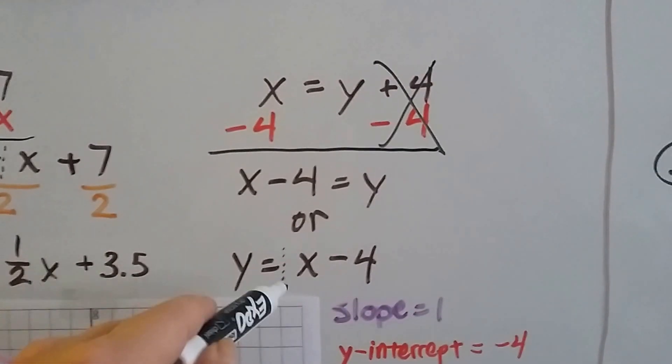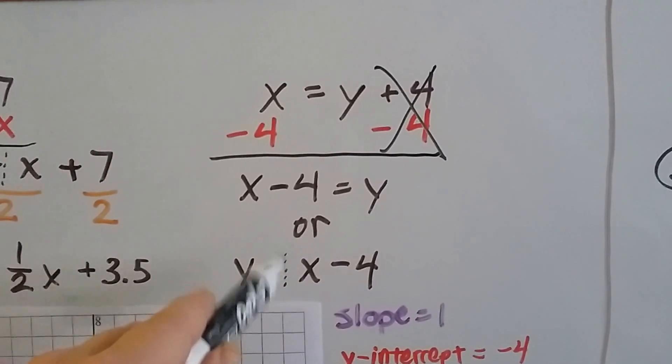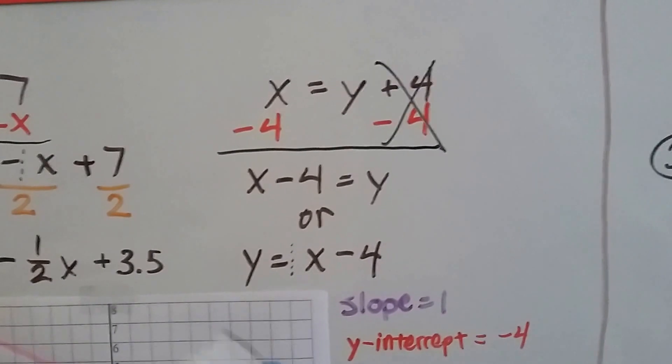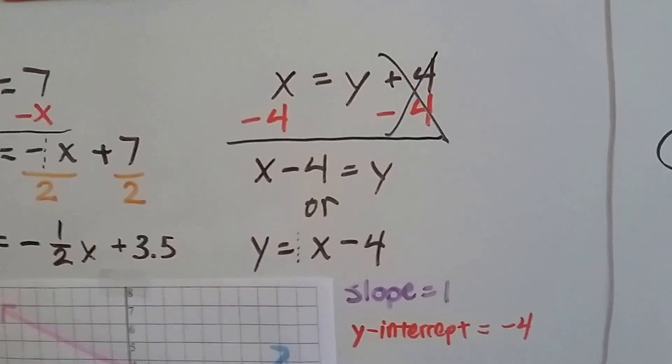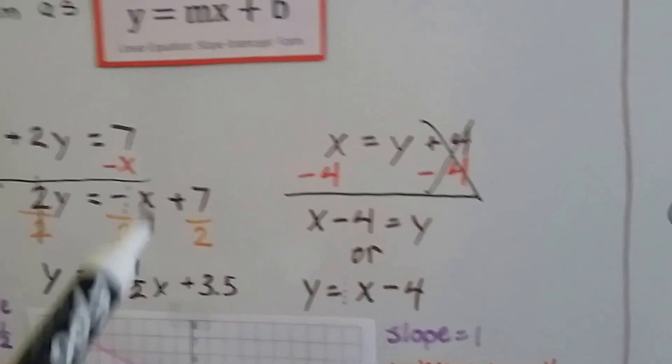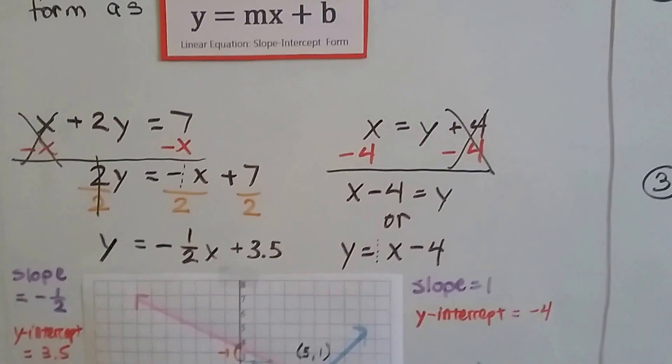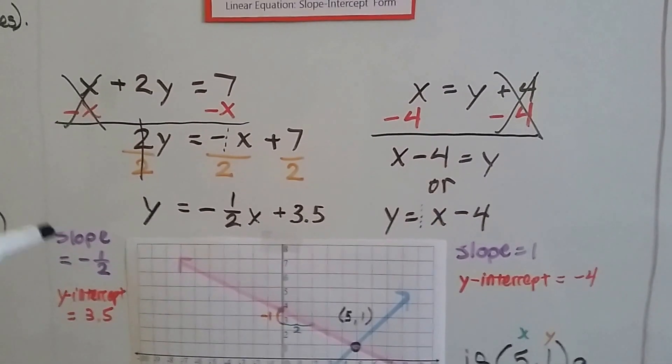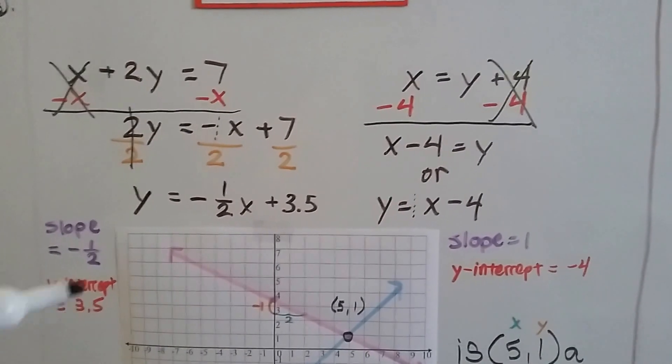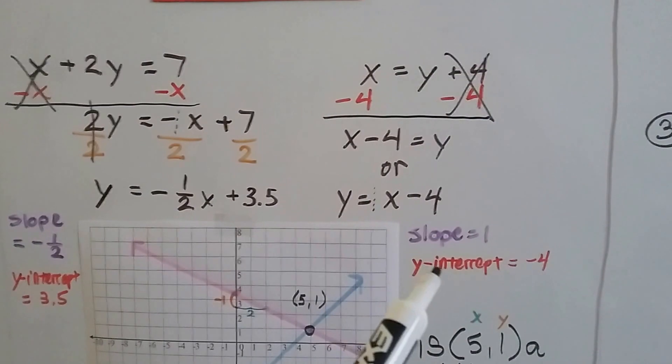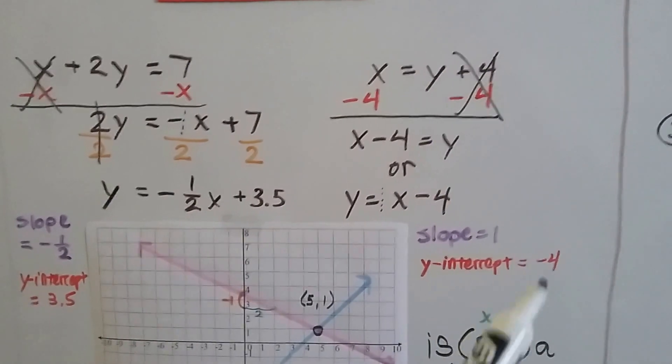So we've got this invisible one in front of the x for the slope. So y equals 1x minus 4. So we want to make sure that x is up front and the b, that negative 4, is in the back. So this one, the slope is negative half and the y-intercept is 3.5. This one, the slope is a 1 and the y-intercept is a negative 4.